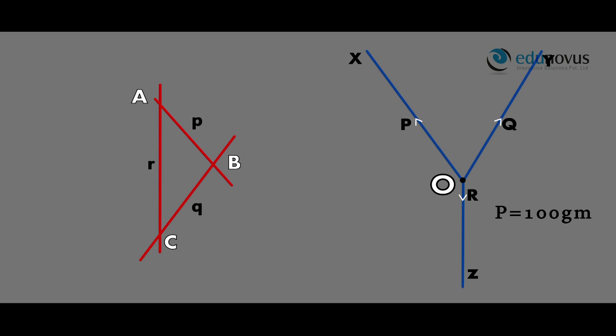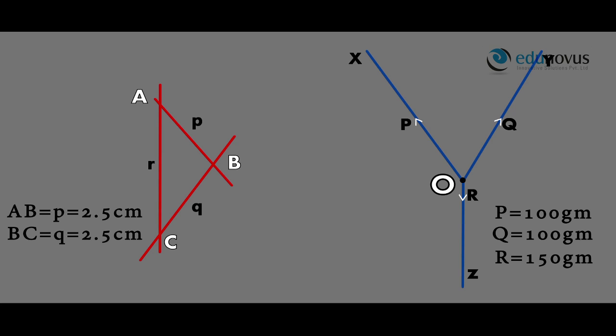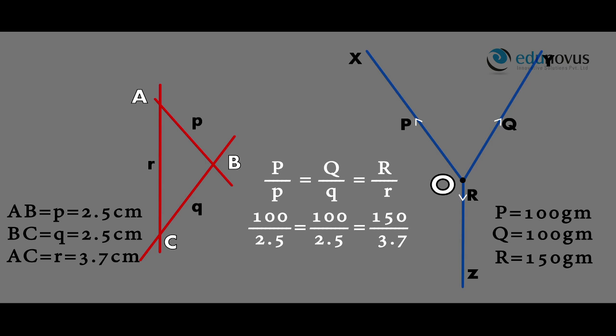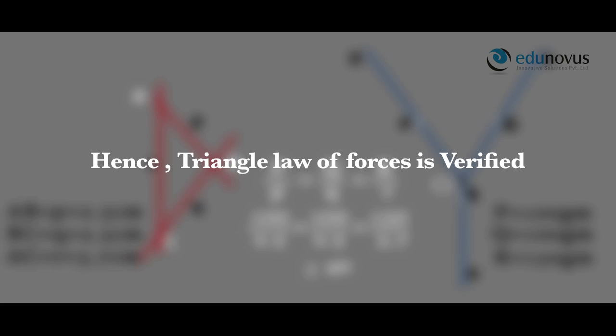Here the force P is equal to 100 grams, Q is equal to 100 grams and R is equal to 150 grams. The corresponding lengths from the formed triangle ABC are P is equal to 2.5 centimeters, Q is equal to 2.5 centimeters, R is equal to 3.7 centimeters. The values of P/p, Q/q and R/r are equal to 100/2.5 = 100/2.5 = 150/3.7. They are almost similar to 40. Hence, the triangle law of forces is verified.